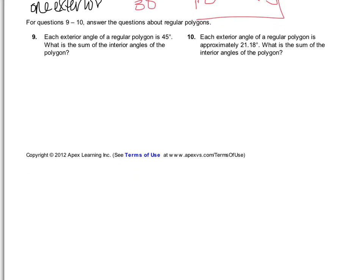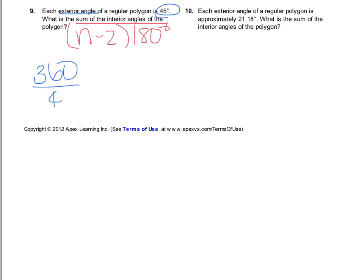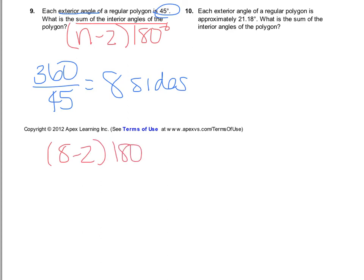For numbers 9 and 10, these require more work. Number 9 says each exterior angle of a regular polygon is 45 degrees — what is the sum of the interior angles? To find the sum I need the formula (n minus 2) times 180, but first I need the number of sides. Since the exterior angle is 45, I do 360 divided by 45, getting 8 sides. Then 8 minus 2 times 180 gives 1080 degrees. So if the exterior angle is 45 degrees, there are 1080 degrees on the inside.